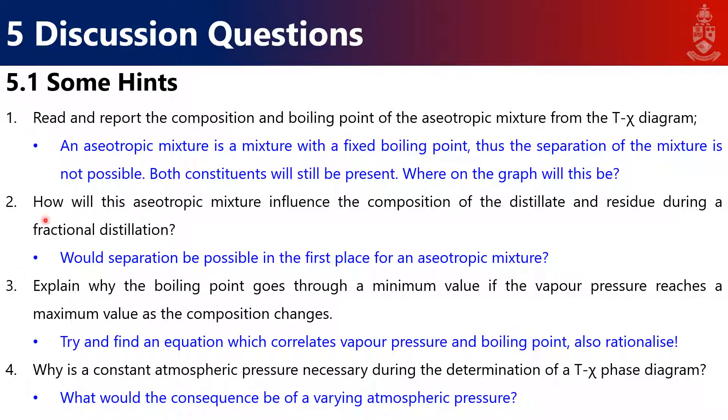How will the azeotropic mixture influence the composition of the distillate and residue during fractional distillation? Explain why the boiling point goes through a minimum value if the vapor pressure reaches a maximum value. Try and find an equation which correlates vapor pressure and boiling point. Look at equations like Clausius-Clapeyron.